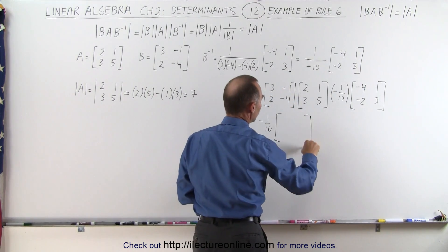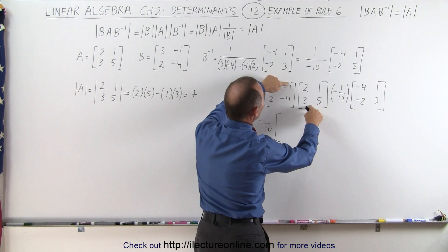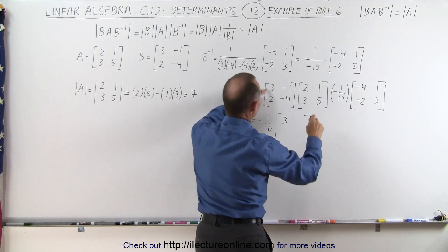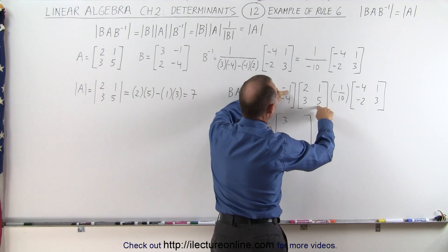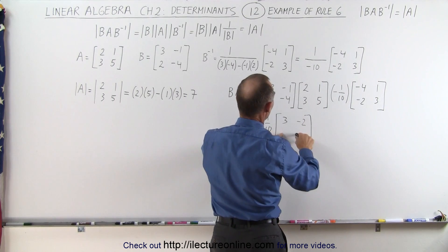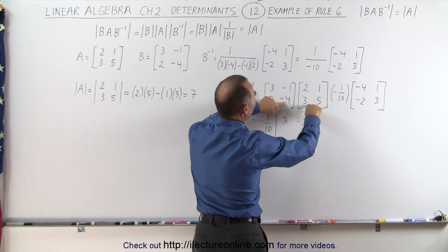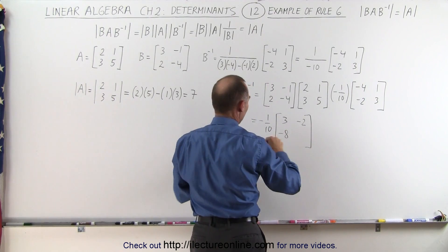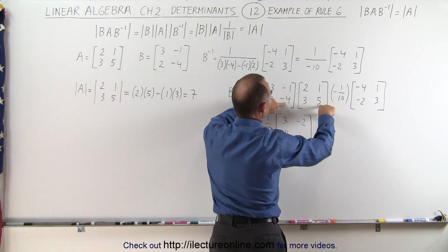So here we're going to end up with a 2 by 2 matrix. To get the first element we multiply 3 times 2 plus minus 1 times 3 — that's 6 minus 3, which gives us negative 3. Then for this element, this row times this column: 3 times 1 plus negative 1 times 5 — that's 3 minus 5, which gives us negative 2. For the bottom row, 2 times 2 is 4, minus 4 times 3 is minus 12, giving minus 8. And finally, 2 times 1 is 2, minus 4 times 5 is minus 20 — 2 minus 20 is minus 18.